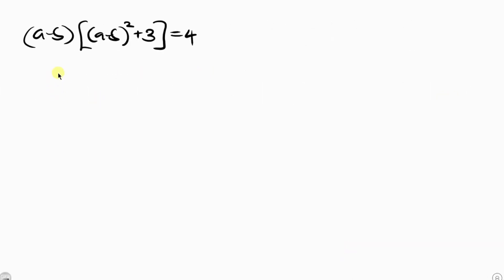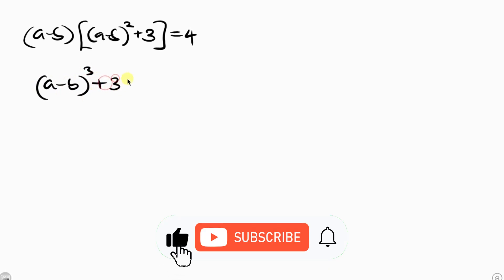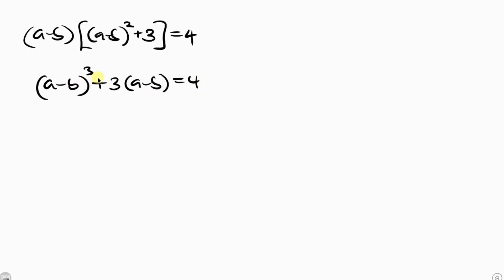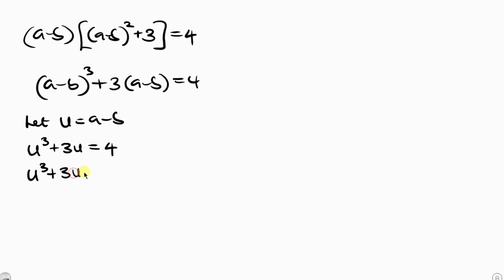Opening up the bracket, we have A minus B cubed plus 3 times A minus B, equal to 4. We have a cubic equation, so let U equal A minus B. Wherever I see A minus B, I put U. This becomes U cubed plus 3U equals 4, or moving the 4 to the left: U cubed plus 3U minus 4 equals 0.